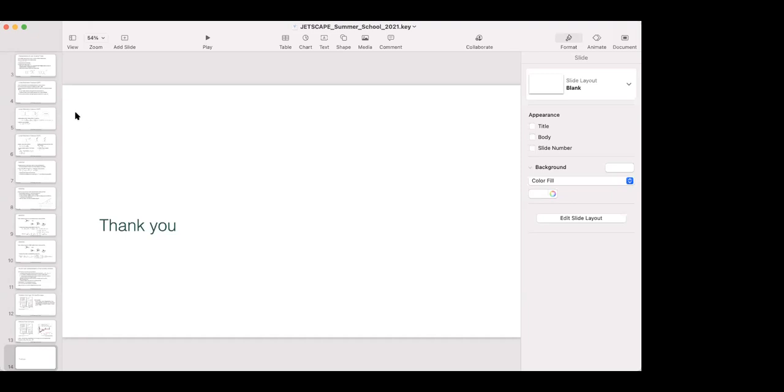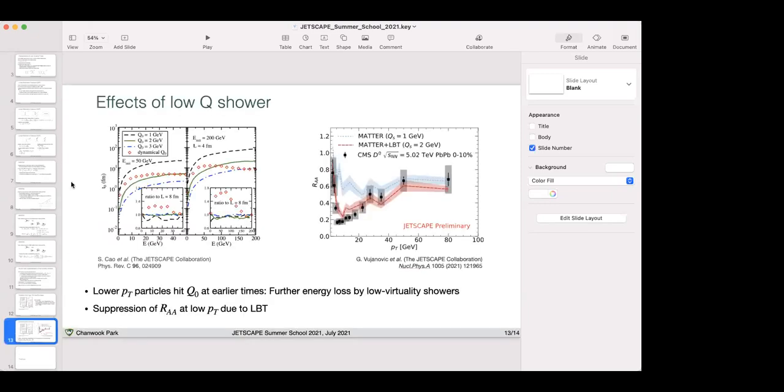Thank you for this talk. I wanted to ask on your last slide number 13, where you compare Matter versus Matter and LBT. I noticed that the value of Qs is different for these two models. Can you touch upon why that is?